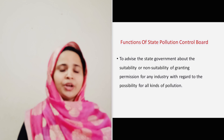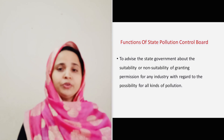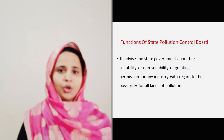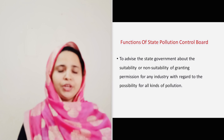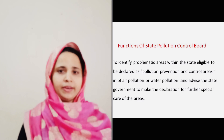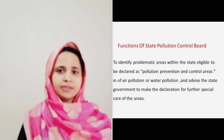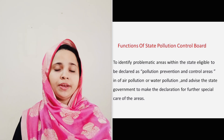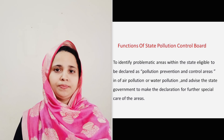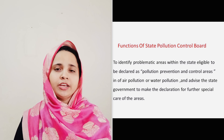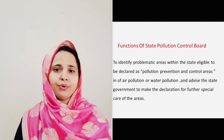Then, to advise the State Government about the sustainability or non-sustainability of granting permission for an industry with regard to the possibility of all kinds of pollution. Then, to identify the problematic areas within the state eligible to be declared as pollution prevention and control areas in respect of water or air pollution, and to advise the State Government to make the declaration for further special care for the area.